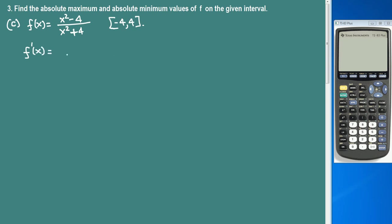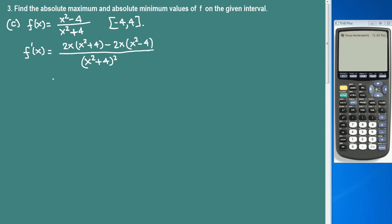We find the derivative using the quotient rule. On the bottom, the bottom is squared. On the top: derivative of top times bottom minus derivative of bottom times top. Derivative of x squared is 2x, minus 2x times the bottom, minus derivative of bottom (which is 2x) times the top (x squared minus 4).